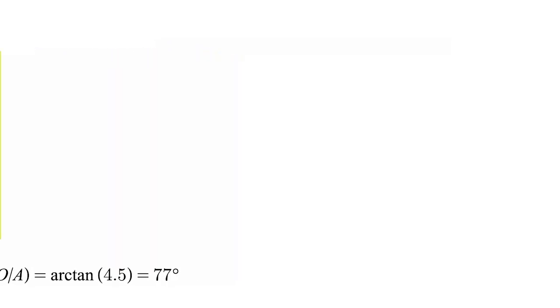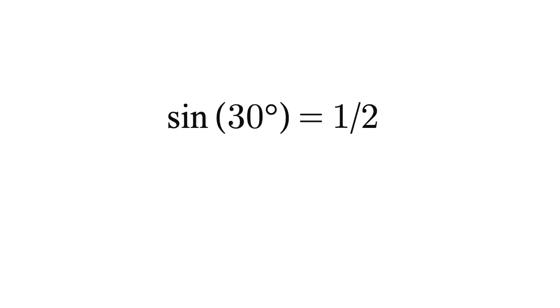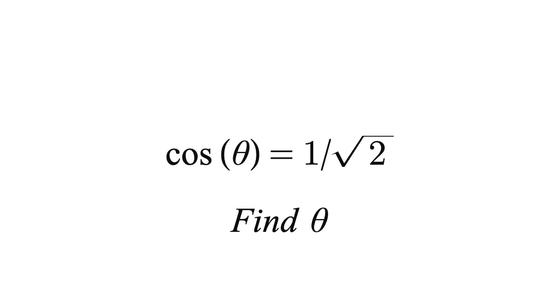Let's use an example. If sin 30 equals 1 over 2, then inverse sin of 1 over 2 equals 30. Let's try this question. If cos theta equals 1 over root 2, find theta.